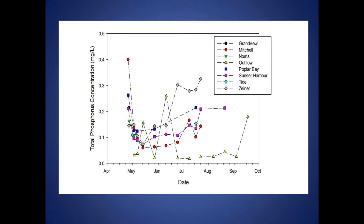This is what we measured in 2013 for Pigeon Lake — total phosphorus concentrations at each of the inflowing streams going into the lake. This is actually a pretty typical pattern. Dave True did similar work on Baptiste Lake back in the early 1980s and found a very similar pattern: fairly high concentrations of phosphorus going into the lake early in the spring season, then it levels out. The little peaks we see are related to summer storm events — a big rain event washes material into the streams and into the lake.